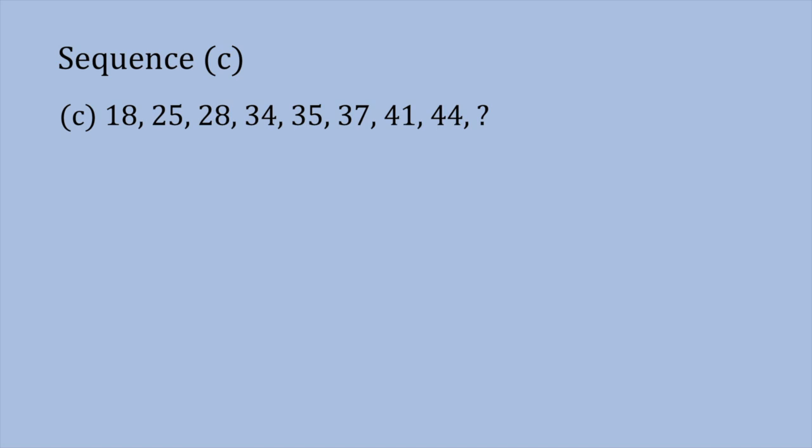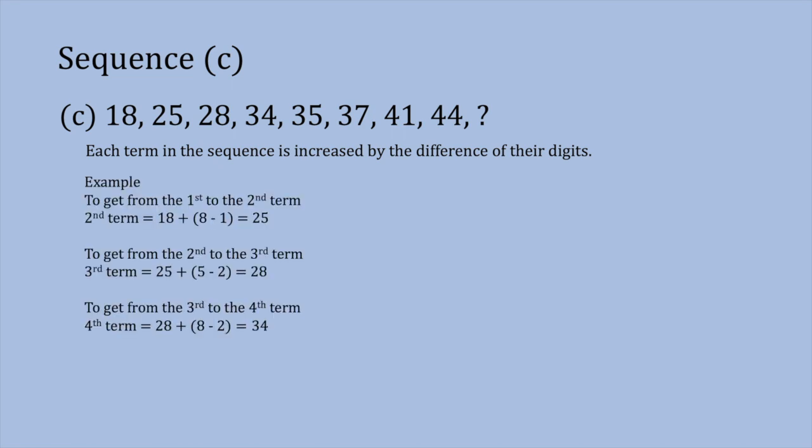Now we look at Sequence C. We've got the terms 18, 25, 28, 34, 35, 37, 41, 44. We need to find the last term in the sequence. To do this we need to figure out the pattern between each of the terms: each term is increased by the difference of its digits. To get from the first term to the second: 18 plus (8 minus 1), which is 7, gives us 25. To get from the second to the third: 25 plus (5 minus 2), which is 3, gives us 28. From the third to the fourth: 28 plus (8 minus 2), which is 6, gives us 34.